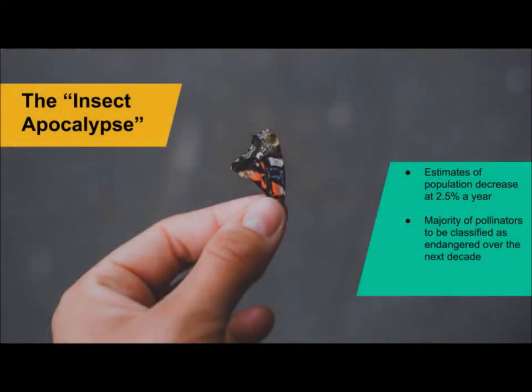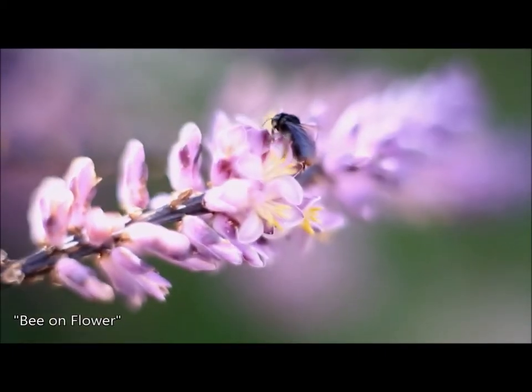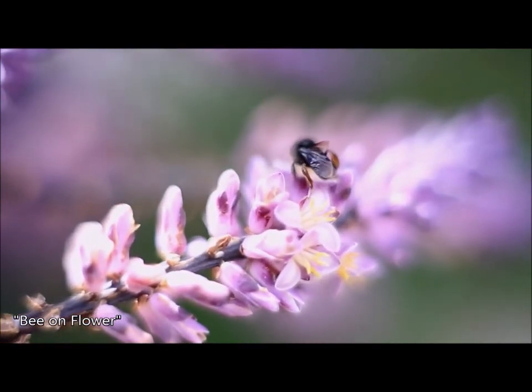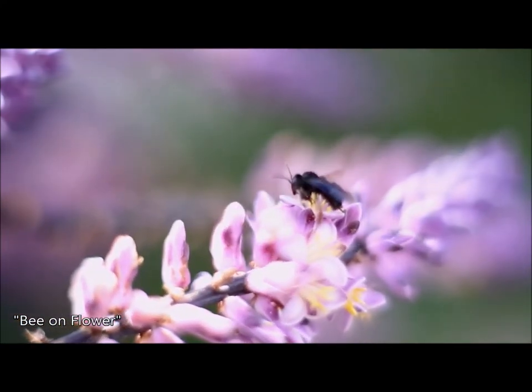In what was quickly labeled the 'great insect apocalypse,' media outlets began reporting that scientists were noticing a significant loss of insect populations. Reports included estimates of global populations decreasing by 2.5% a year, to projections that all insect pollinators may be classified as endangered over the next decade. But the reality, while sobering, is less straightforward — much of what we know is based on studies conducted in North America, and it remains uncertain how these trends are reflected worldwide. What is clear to most entomologists is that the threat is undeniable and something needs to be done.